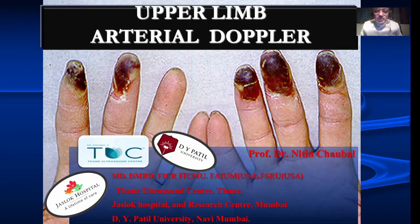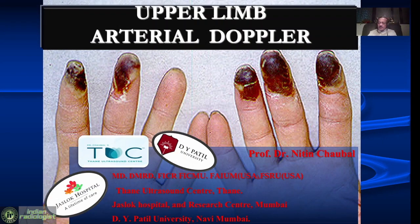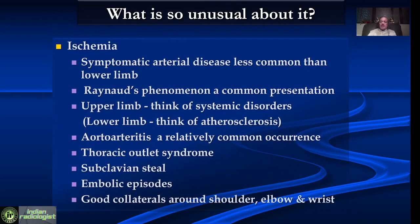Hi, I am Dr. Nitin Sober and I am going to talk on upper limb arterial Doppler. What is very unusual about upper limb arterial Doppler is that symptomatic arterial disease is less common in the upper limb as compared to lower limb. One of the most common presenting features of upper limb ischemia is Raynaud's phenomenon — that means the patient gets episodes of discoloration in the fingertips, typically during cold season or sometimes even with emotional trauma.